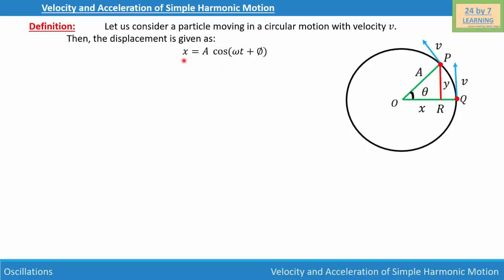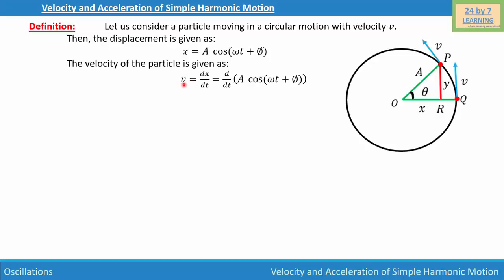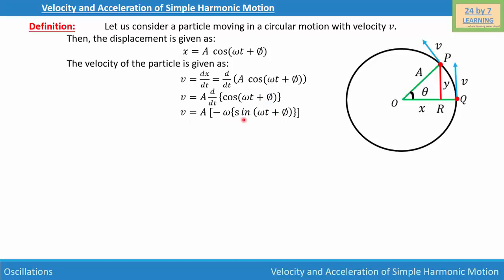To find the velocity, we differentiate the displacement equation on both sides. The velocity is v = dx/dt = d/dt of A cos(ωt + φ). Since A is constant, it comes out, giving v = A · d/dt[cos(ωt + φ)]. Differentiating, the derivative of (ωt + φ) is ω, and the derivative of cosine is negative sine, so v = −Aω sin(ωt + φ), which simplifies to v = Aω sin(ωt + φ).